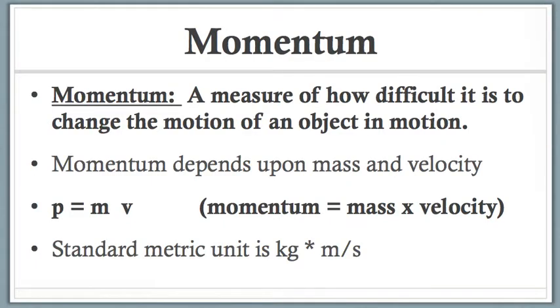Momentum is a measure of how difficult it is to change the motion of an object. It depends on the object's mass and velocity. For instance, if you have a tennis ball and a bowling ball, the bowling ball is heavier and that's going to automatically give it more momentum, even if they're going at the same speed.